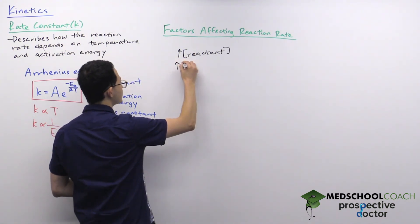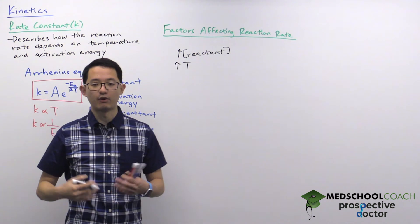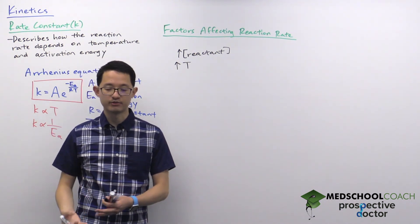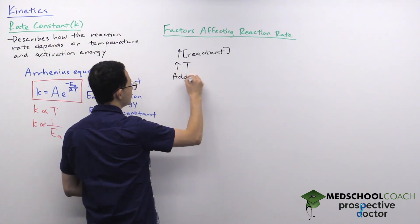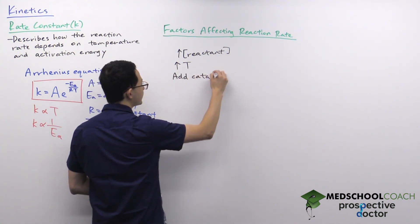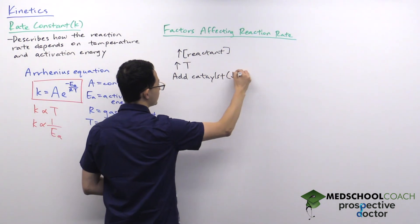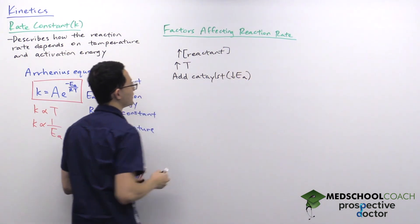You can increase the temperature, and from our discussion just now, increasing the temperature will increase the rate constant. You can add a catalyst, and adding a catalyst is essentially decreasing the activation energy.